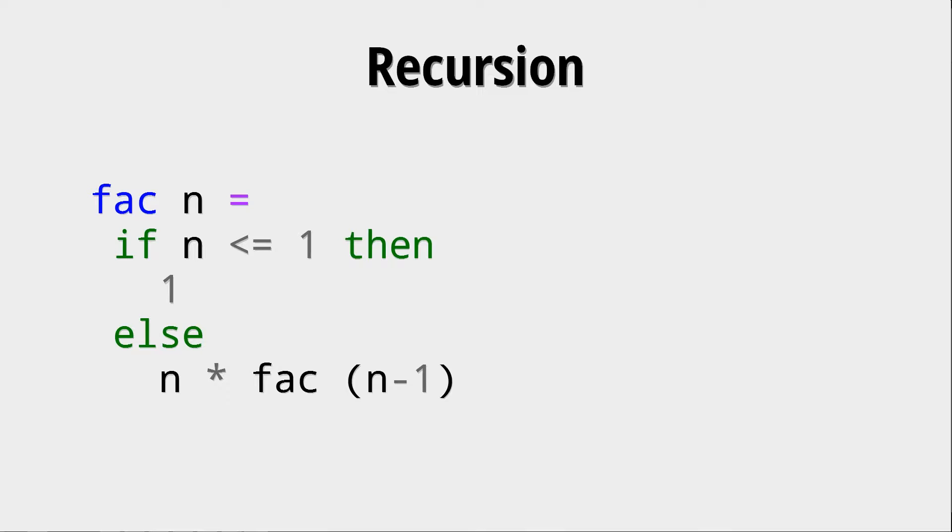We say that the definition of the faculty of n is n times the faculty of n minus 1. That is also the mathematical definition of the faculty. If we look at how the evaluation works, we see it works sort of as expected.